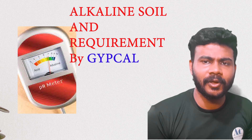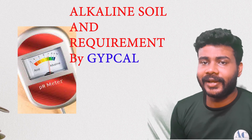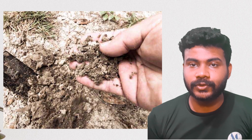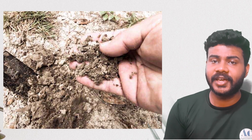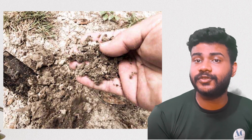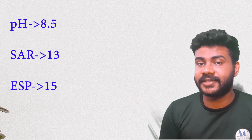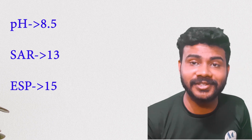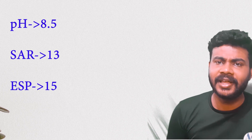So what is alkalinity? Alkalinity is the accumulation of excess sodium in soil which has a pH range more than 8.5, ESP more than 15, and SAR value more than 13. SAR stands for sodium absorption rate and ESP stands for exchangeable sodium percentage.